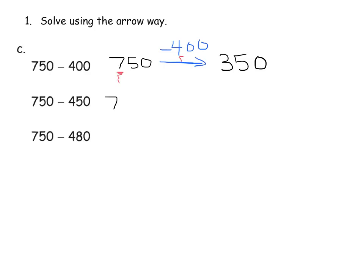Now we can take a look at 750 minus 450. We can do it again by subtracting that 400. So we have 700s minus 400s, which gives us 300s — so we still have 350. But now we're going to take away the 50. So we subtract 50, and 350 minus 50 gives us 300.